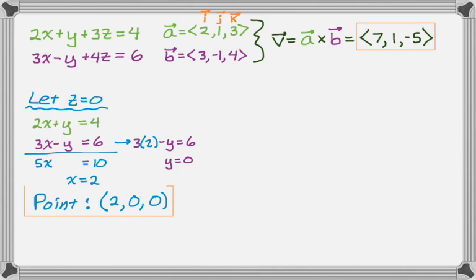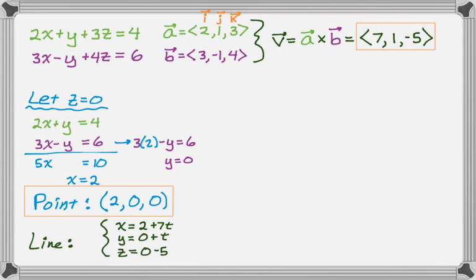So we have the point and we have the direction vector. So let's write the line using parametric equations. So there's our equation for our line.